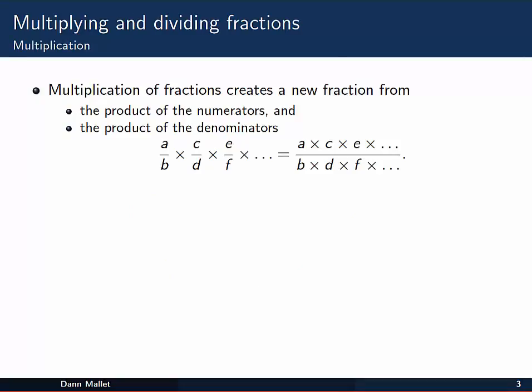Multiplication of fractions is actually one of the most easy things you can do with them. So multiplying a fraction creates a new fraction, which is made up of the product of the numerators and the product of the denominators. So for example, if we had a/b times c/d, we'd end up with the fraction (a times c) over (b times d). You can extend this as much as you like, as you can see in this little rule here.